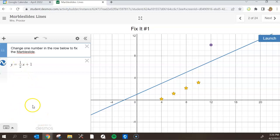So one half multiplied by x. Notice a rise of one and a run of two. Rise of one, run of two, rise of one, run of two.